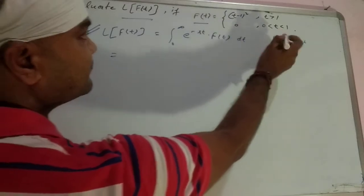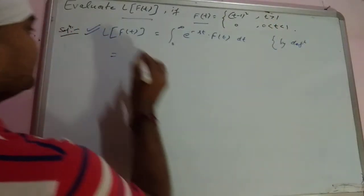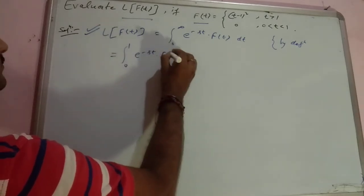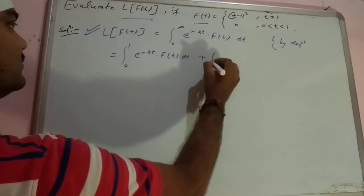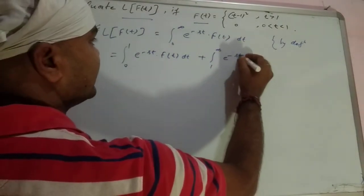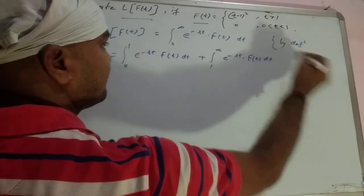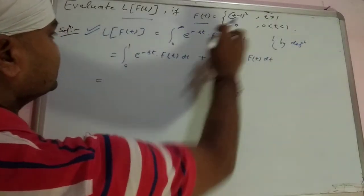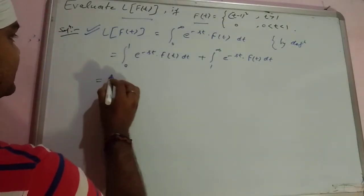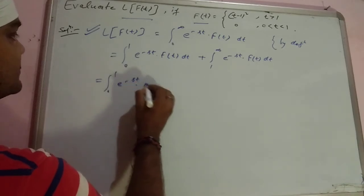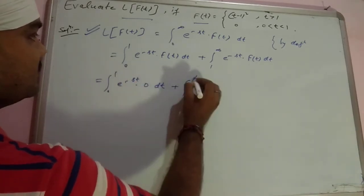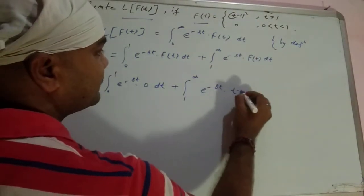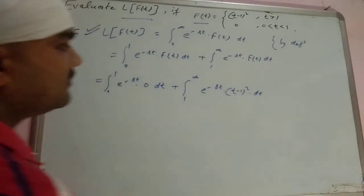We can break this into two parts based on the function's definition over different ranges. So we split it as integral from 0 to 1 of e^(-st) times f(t) dt plus integral from 1 to infinity of e^(-st) times f(t) dt. In the range 0 to 1, f(t) equals 0, so the first integral becomes zero. In the second part, f(t) is replaced by (t minus 1) whole square.